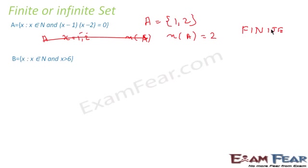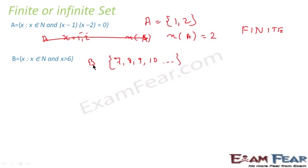Example: set B where x is a natural number and x > 6. Natural numbers greater than 6 are 7, 8, 9, 10, ... and the list is infinite. In roster form, B = {7, 8, 9, 10, ...}. The number of elements in B is infinite, so B is an infinite set.